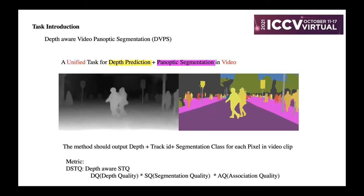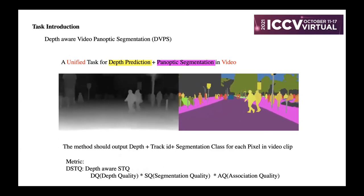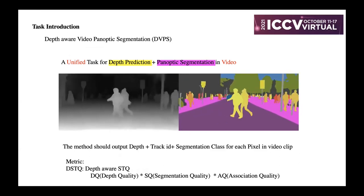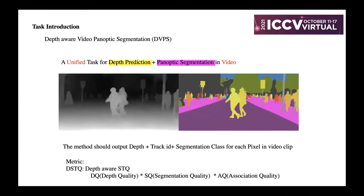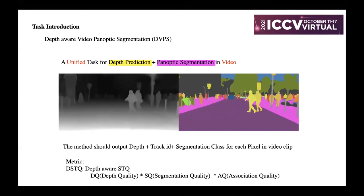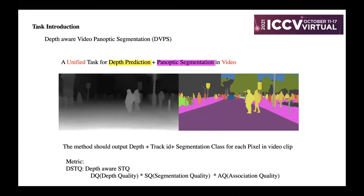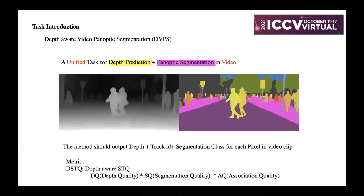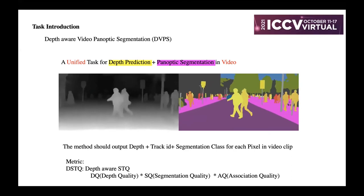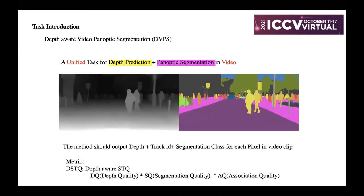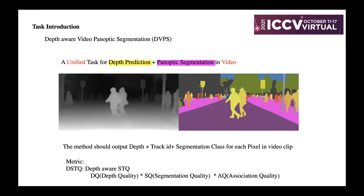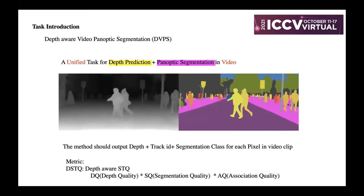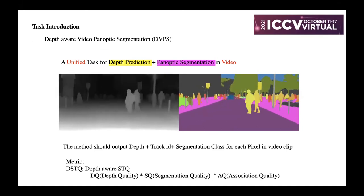Let me first introduce the task: DVPS, Depth-Aware Video Panoptic Segmentation. This is a unified task for depth prediction plus panoptic segmentation in video. The method should output the depth map and segmentation class for each pixel in a video clip. The metric is DSTQ — Depth-Aware STQ — which contains three items: DQ (depth quality), SQ (segmentation quality), and AQ (association quality). To improve performance we should improve each of these metrics individually.